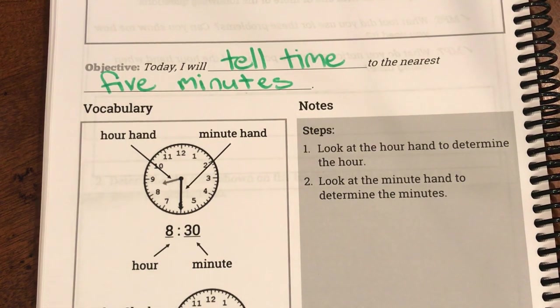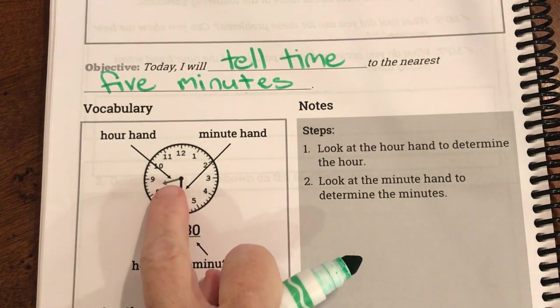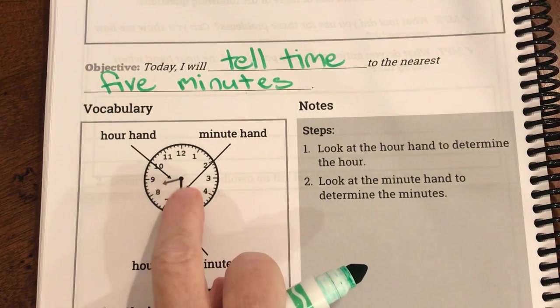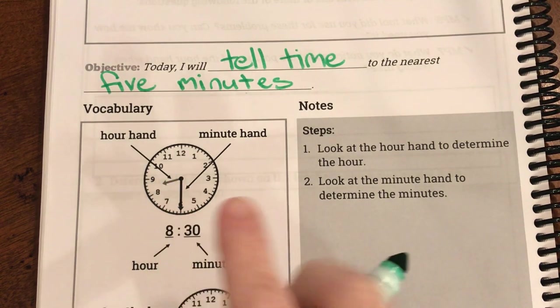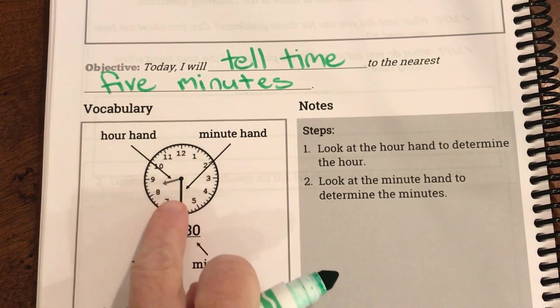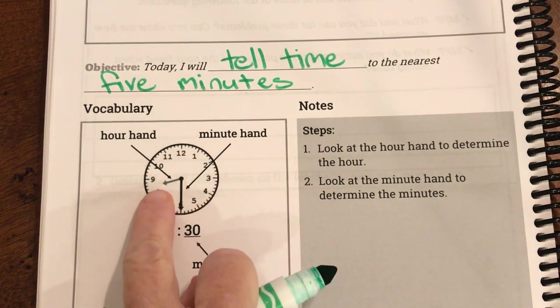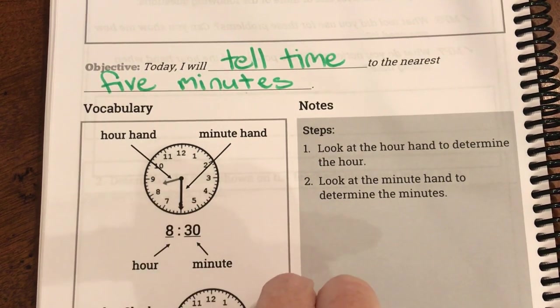Analog clocks have two hands. That's what we call these. We call them hands. Now the hour hand and the minute hand, if you look closely you'll see a difference between them.